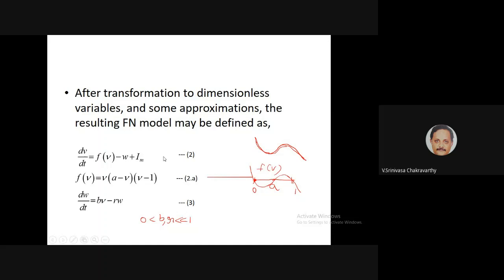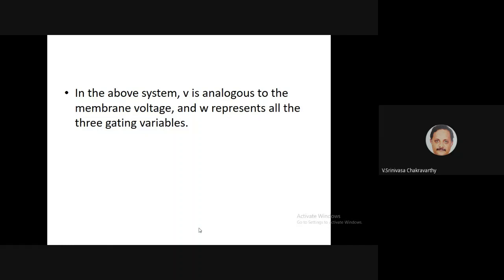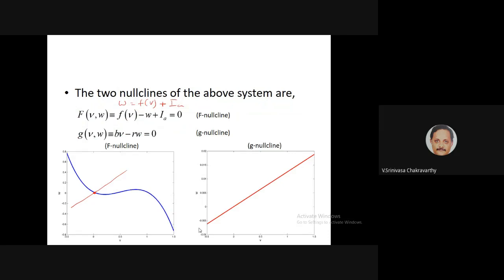After those simplifications, following the original Hodgkin-Huxley paper, we are left with two equations. The first equation tells us what F is — a cubic polynomial with three roots: one at the origin, one at a, and one at one. It looks like an inverted N. The second equation, the w equation, is linear: b·v minus r·w, where b and r are small positive quantities. Here v represents membrane voltage, and w summarizes all the gating variables.